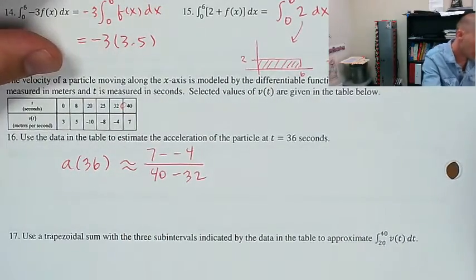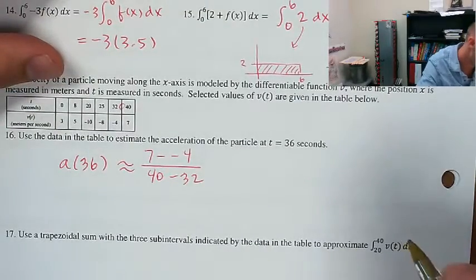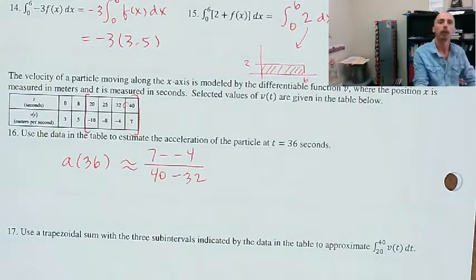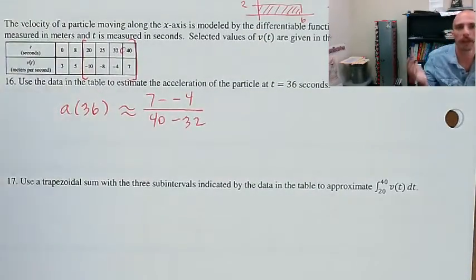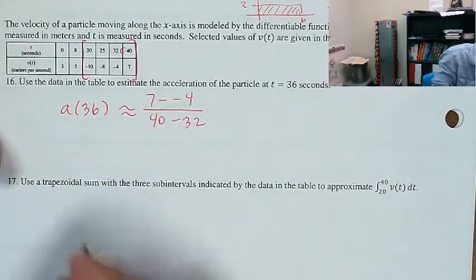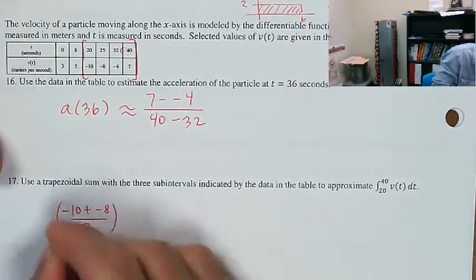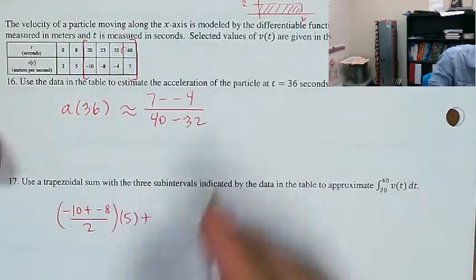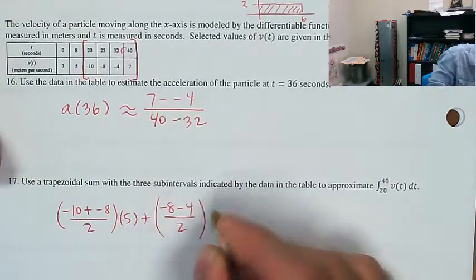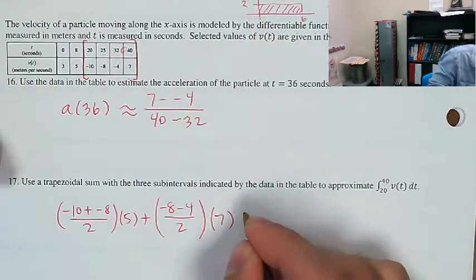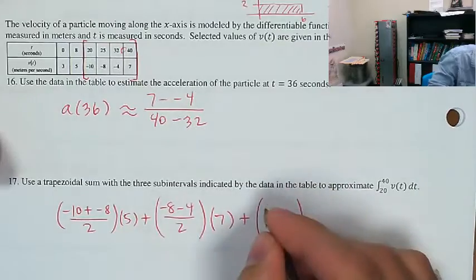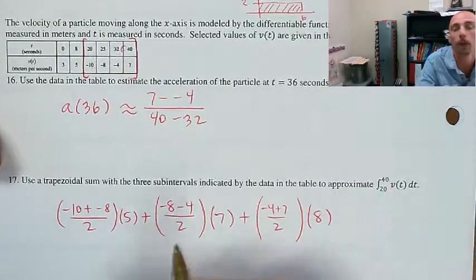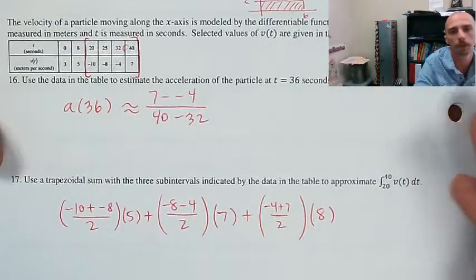Use a trapezoidal sum with three subintervals indicated by the data in the table to approximate the integral from 20 to 40. A trapezoidal sum averages the bases and multiplies by the width. So: (−10 + −8)/2 times 5, plus (−8 + −4)/2 times 7 (from 25 to 32), plus (−4 + 7)/2 times 8 (from 32 to 40). That's a trapezoidal sum to approximate the integral from 20 to 40 of v(t) dt.